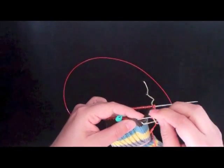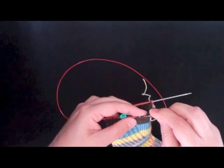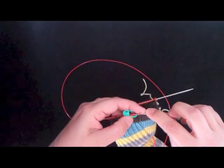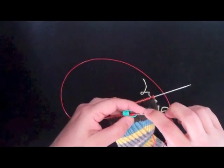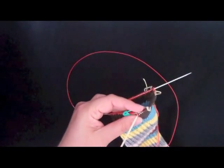And this is instead of, say, putting them on a stitch holder. Particularly for something small like this, small and rounded like a thumb, I really like to use waste yarn because it doesn't stretch out the stitches, and it doesn't weigh them down.